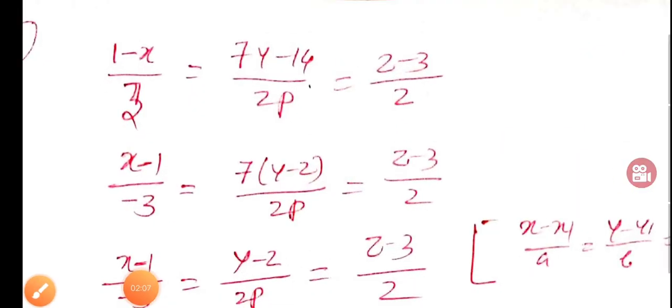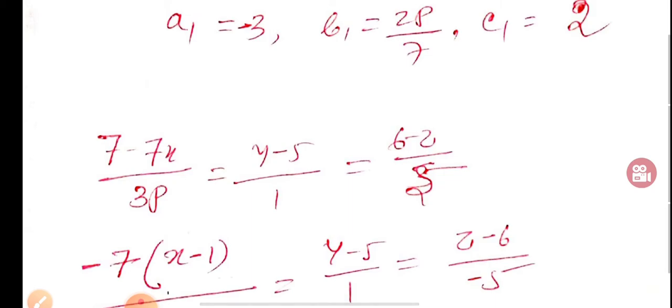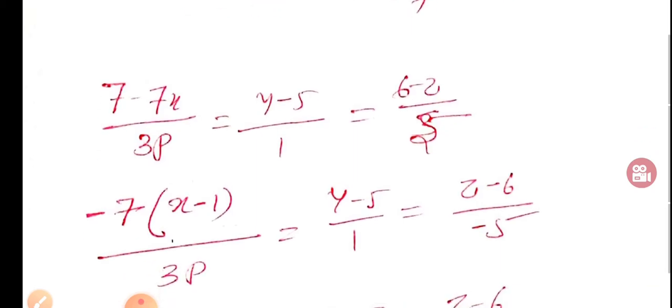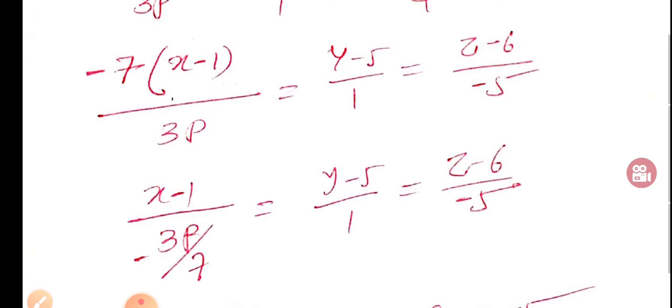The second line: (7-7x)/(3p), rewrite as (x-1)/(-3p), then (y-5)/1, and (6-z)/(-5).